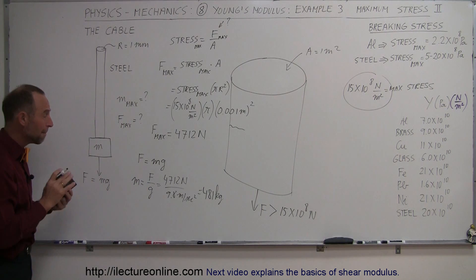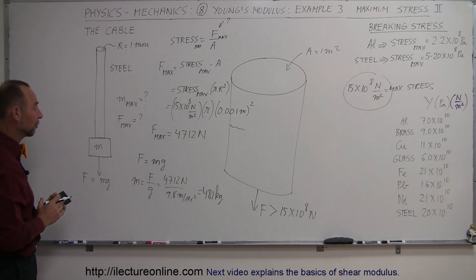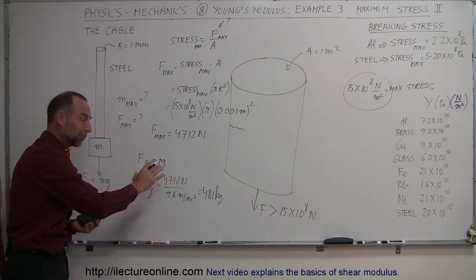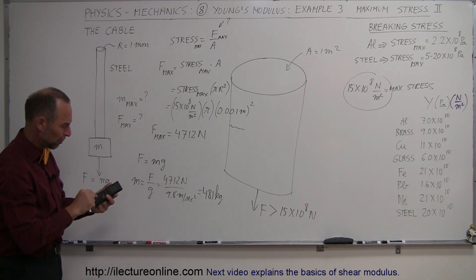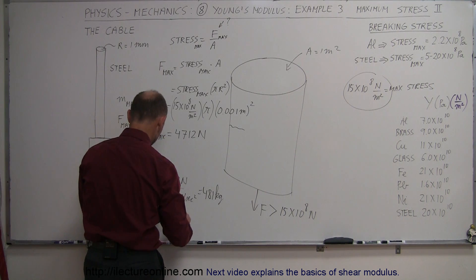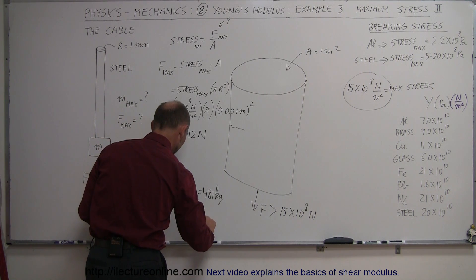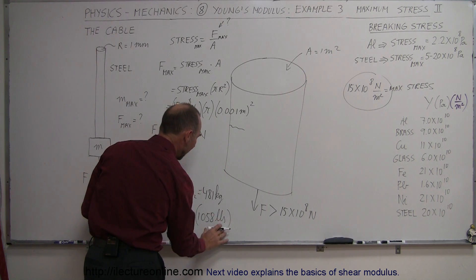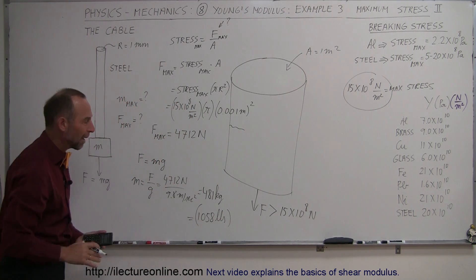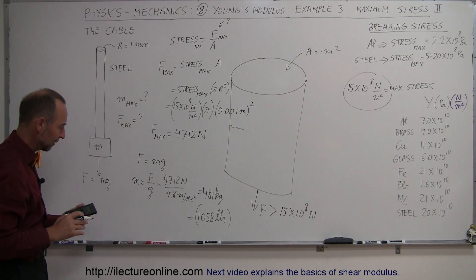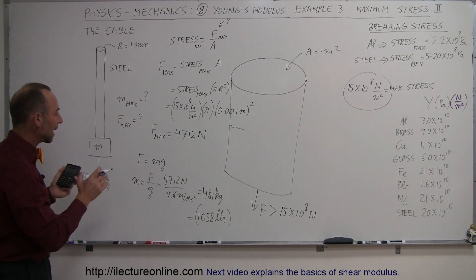So that would be the maximum mass we can hang from that cable before it breaks. Of course, convert that to pounds. The rough conversion from kilograms to pounds is about 2.2. So if we multiply the times 2.2, we get 1,058 pounds. Now, of course, pounds is a force, kilograms is a mass, but we tend to use those interchangeably when we go from kilograms to pounds. All right, so that would be the maximum weight.